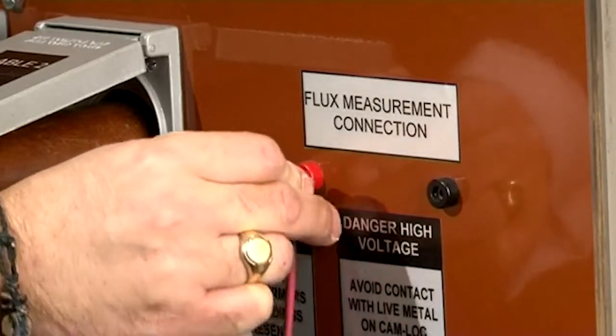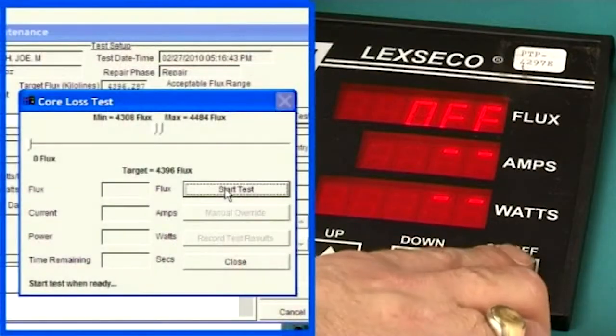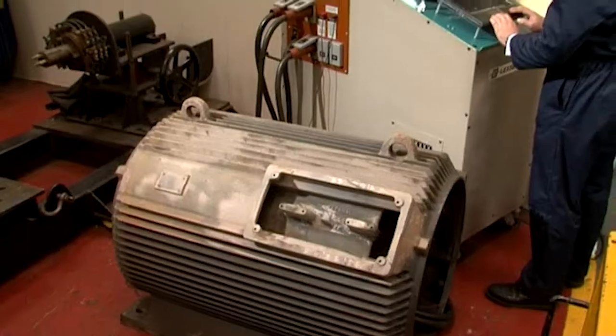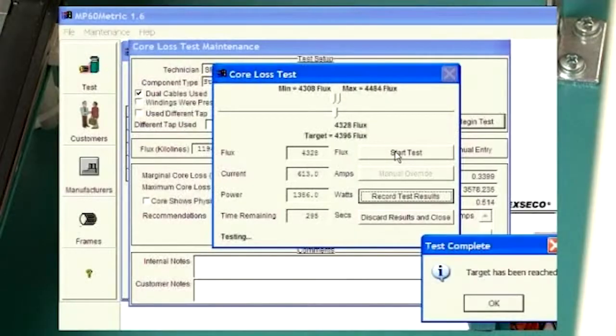The flux measurement leads are then connected. The test begins. When the target current is reached, the core condition is analyzed and recorded.